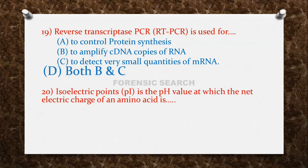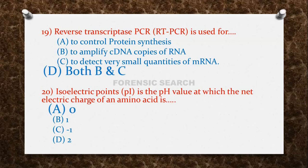The next question: isoelectric point (pI) is the pH value at which the net electric charge of an amino acid is — Option A: 0. Option B: 1. Option C: minus 1. Option D: 2. The correct answer is option A — 0.